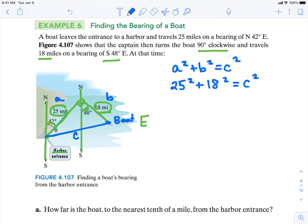We square those numbers and we get 949. Then we would square root 949 to get that C value to be about 30.8 miles.